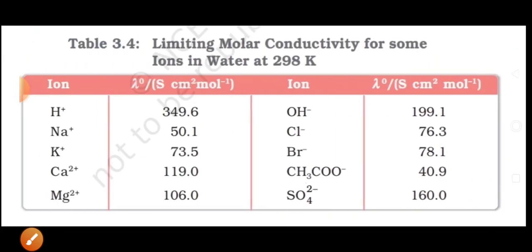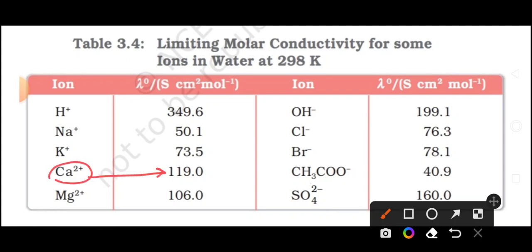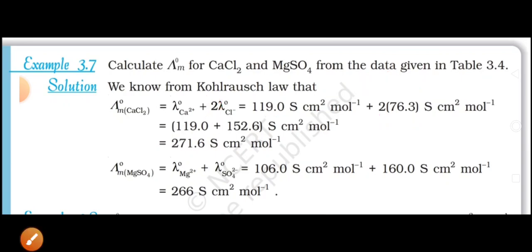Looking at table 3.4, the lambda M0 value for calcium ion is given, and for the chloride ion the value is also given. We substitute those values into the problem: lambda M0 for the calcium ion, plus twice lambda M0 for the chloride ion. It is twice because the formula for calcium chloride is CaCl₂, so there are two chloride ions. Multiplying by 2 and calculating, we get the answer.